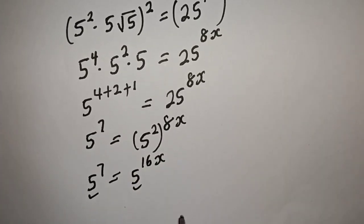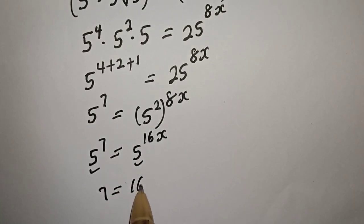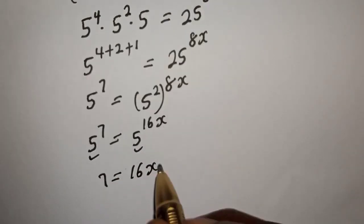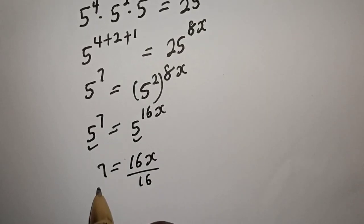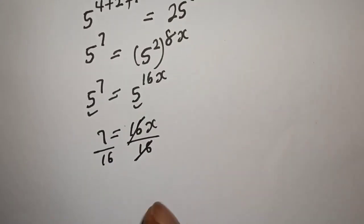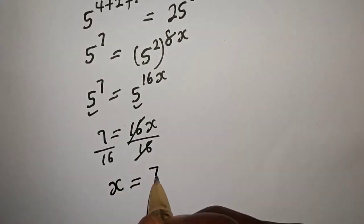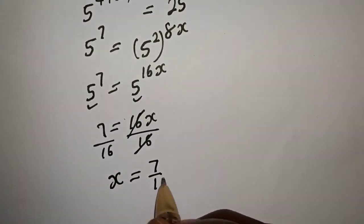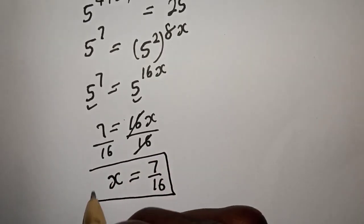We have the same base 5, so 7 is equal to 16x. Now let's divide both sides by 16. This will cancel this. x is equal to 7 over 16, and this is the final answer.